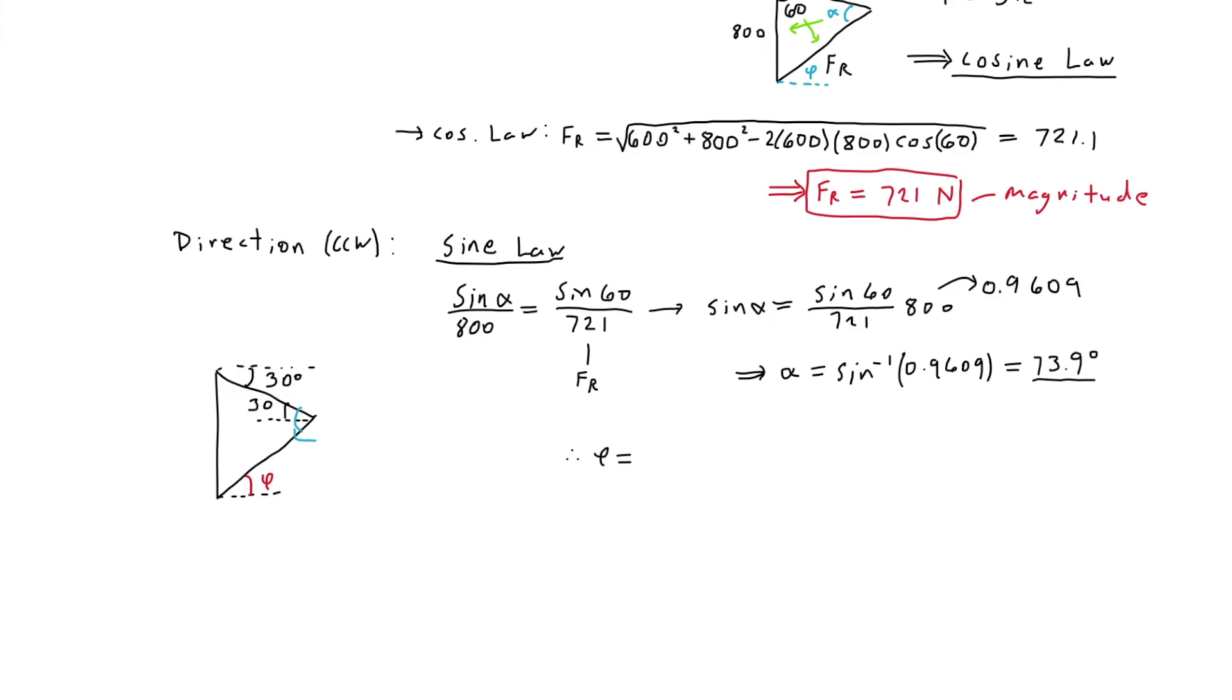This entire angle here is alpha, and hence this angle here is phi due to alternate interior angles. Therefore alpha will be equal to phi plus the 30 degrees.